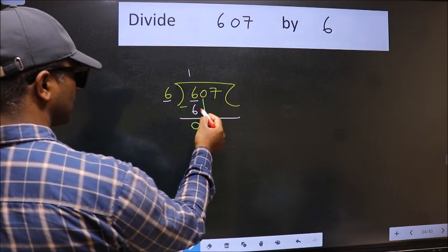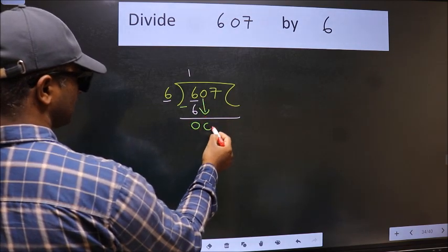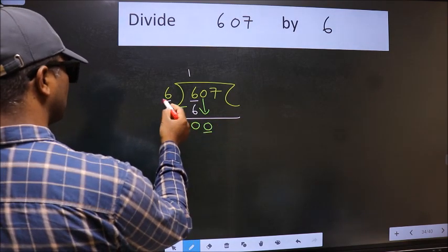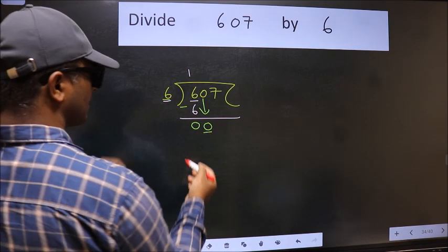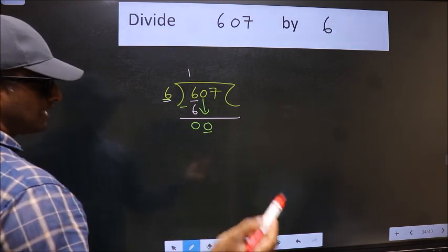After this, bring down the beside number. So 0 down. Now here we have 0 and here 6. 0 is smaller than 6. So we should bring down the 2nd number.